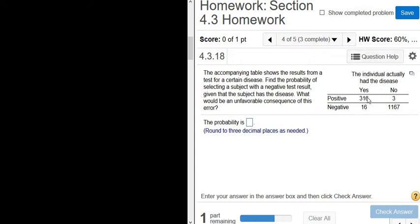In this problem, we have a table. Yes means that the person had the disease. No means the person did not have the disease. Positive means that the test says that the person has the disease, and negative means that the test says that the person does not have the disease.